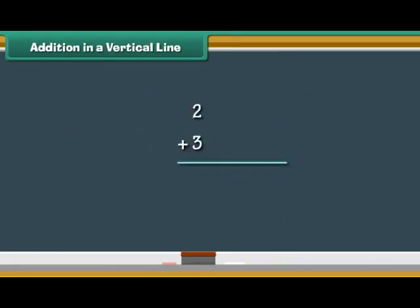Addition in a vertical line — let us now add numbers vertically by writing the numbers one below the other. To add two and three vertically, write the two numbers one below the other. Draw two vertical lines next to two and three vertical lines next to three. Count the vertical lines: one, two, three, four, five. Therefore, two plus three is five.